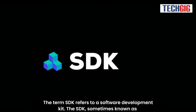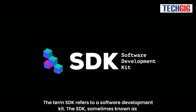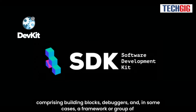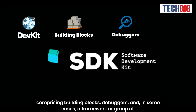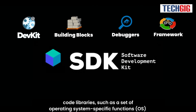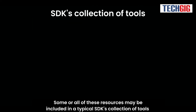The term SDK refers to a software development kit. The SDK, sometimes known as a DevKit, is a collection of software development tools for a certain platform, comprising building blocks, debuggers, and in some cases a framework or group of code libraries, such as a set of operating system-specific functions. Some or all of these resources may be included in a typical SDK's collection of tools.